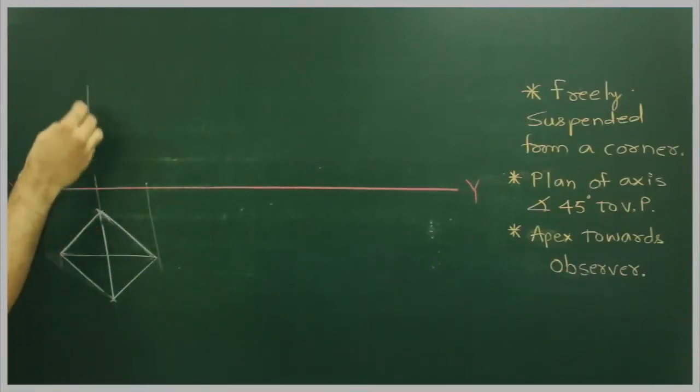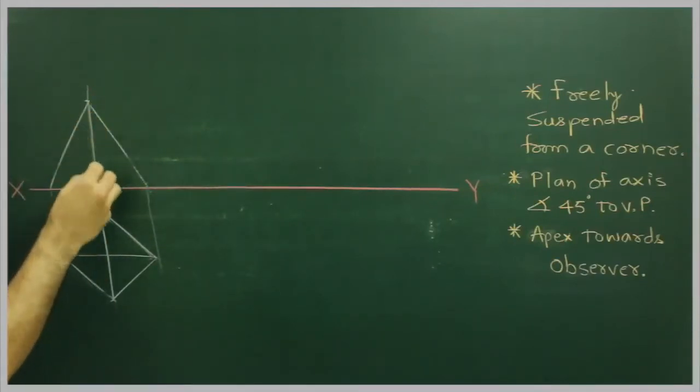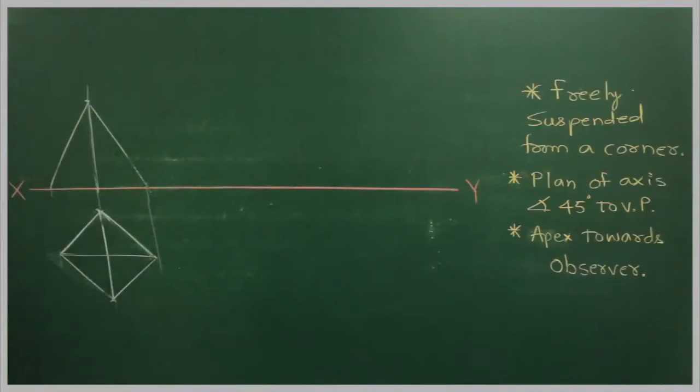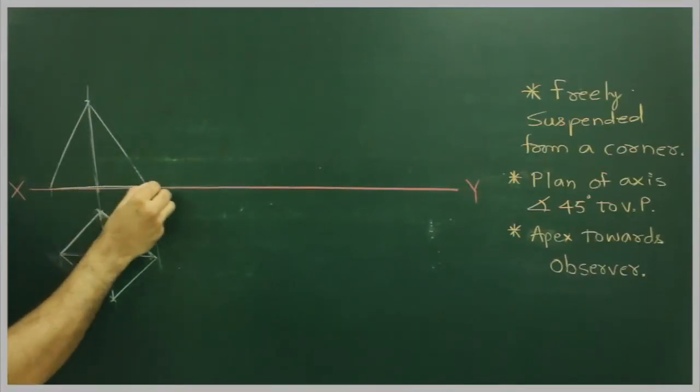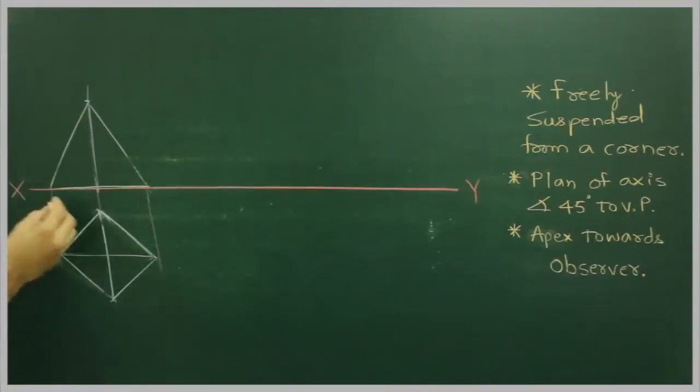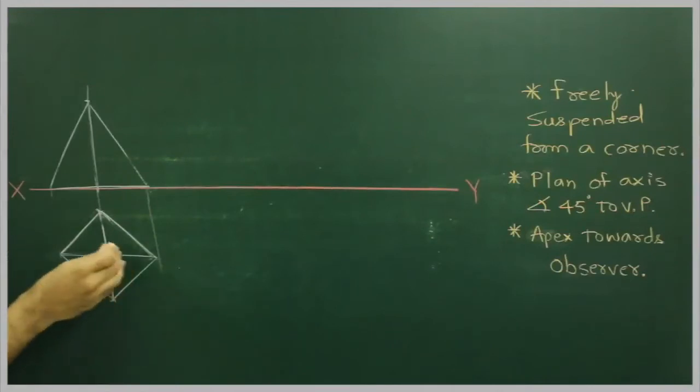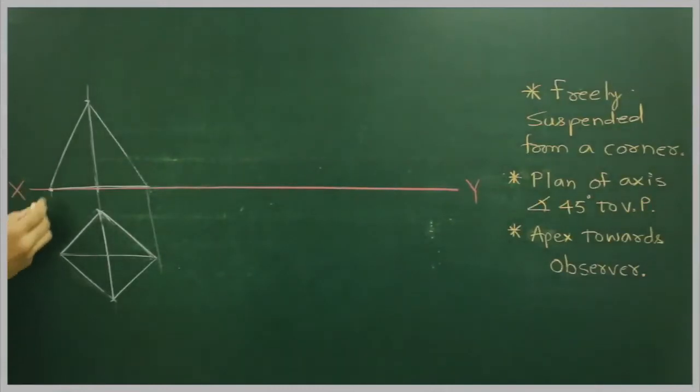We will draw a square pyramid resting on one of its corner. While I come to the other side, it is freely suspended from a corner, so we will take a corner on the right hand side. Now, let us say if it is freely suspended from this corner.